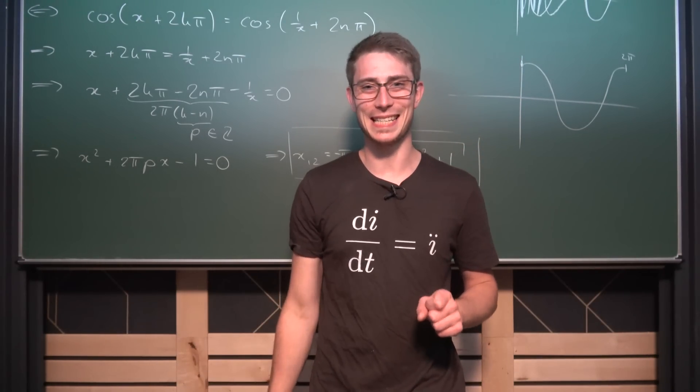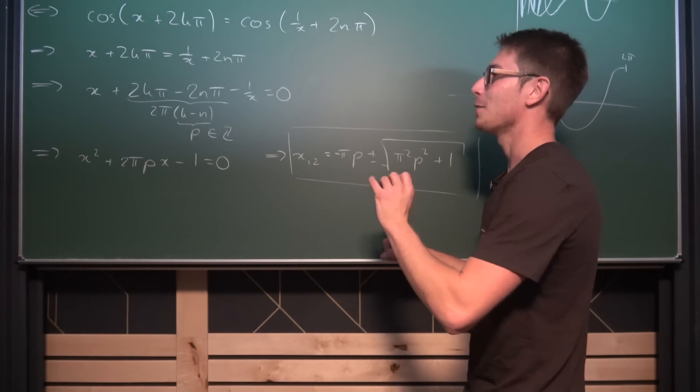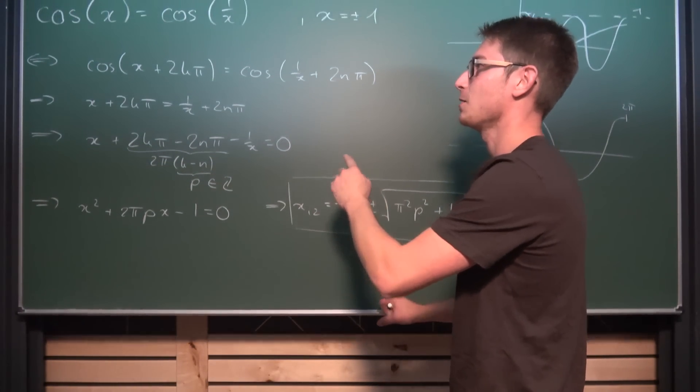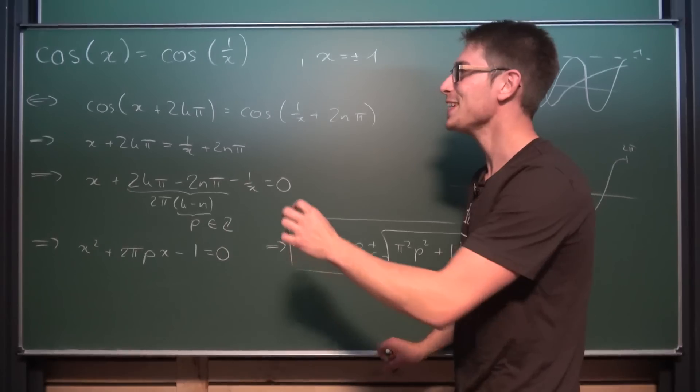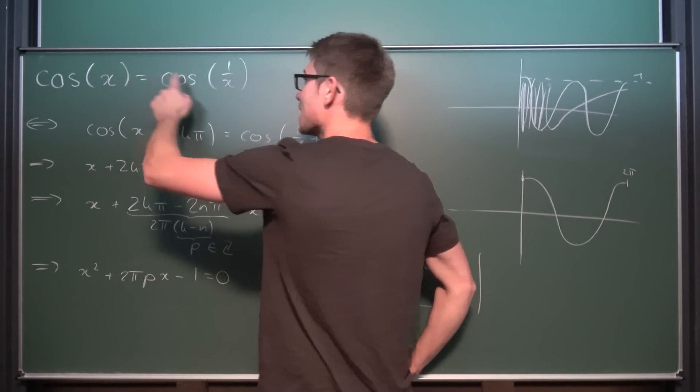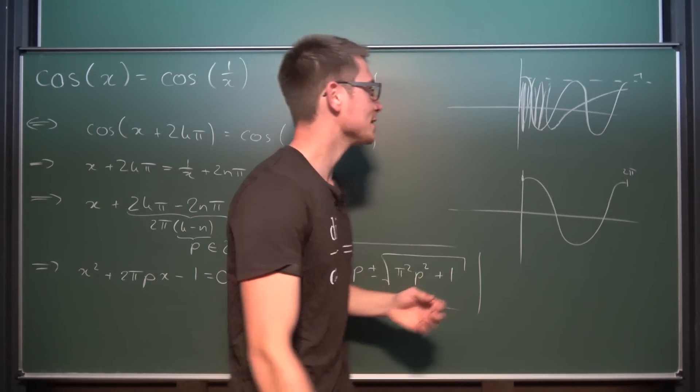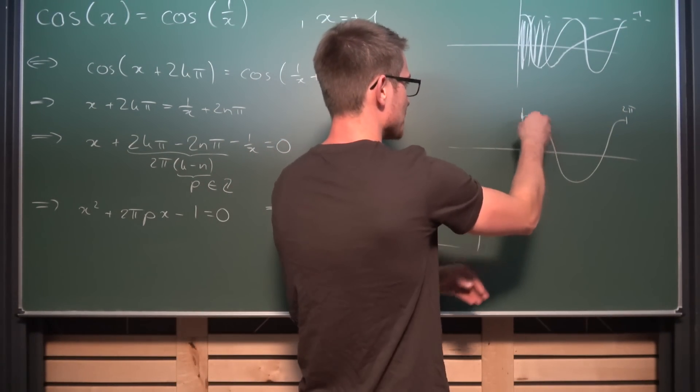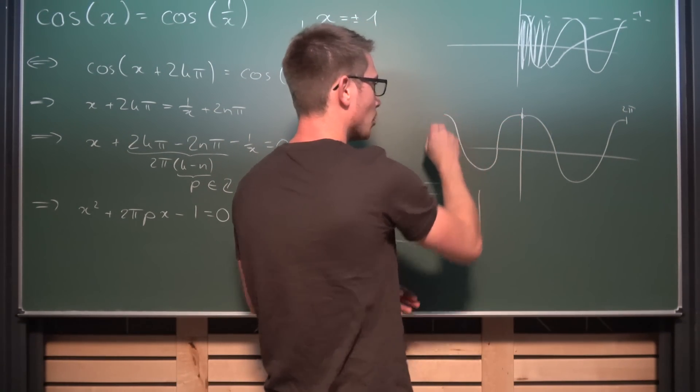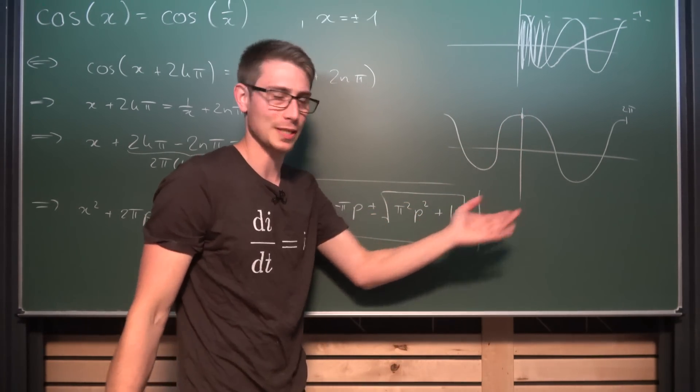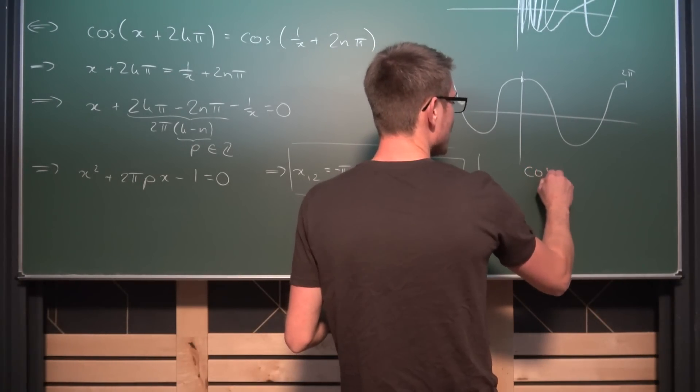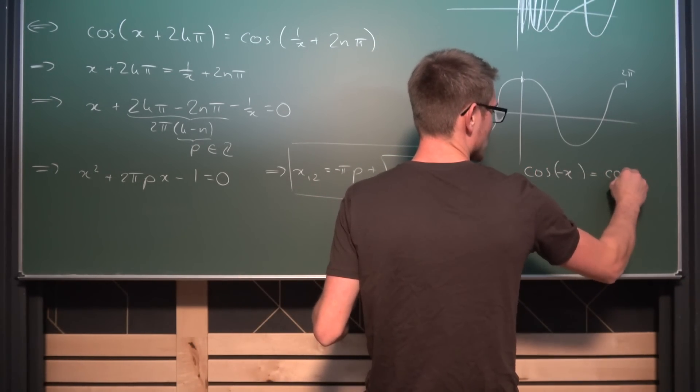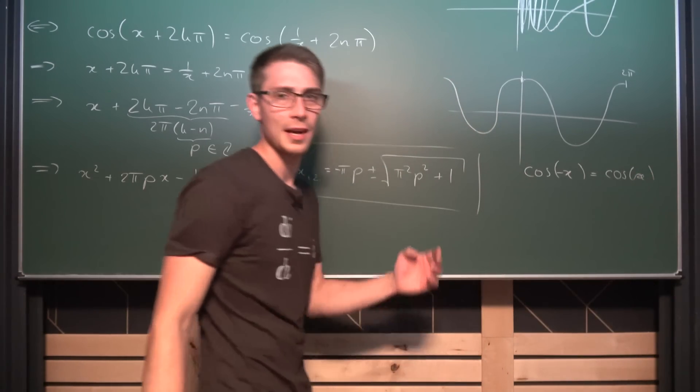But we are not done yet, because there is one nifty thing which I didn't notice until checking my answer in Wolfram Alpha with the cosine, namely that this function right here is an even function. Meaning the cosine is symmetric to the y-axis. Just take a look at that. If we were to just flip this around, you can already see that we get the same function once again. Meaning since it's an even function, we also have that the cosine of negative x is equal to the cosine of x.